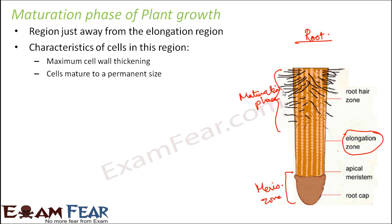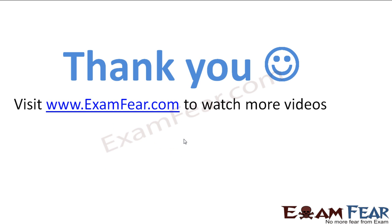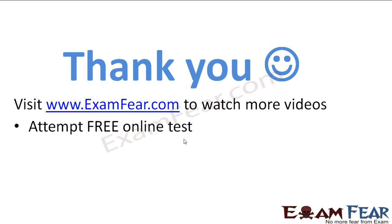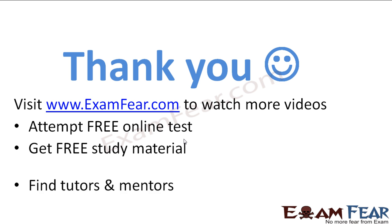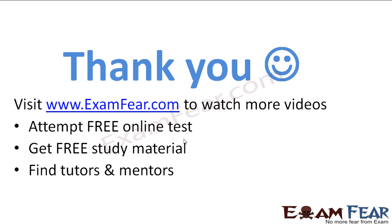So the three phases of plant growth are: first meristematic, followed by elongation, which in turn is followed by the maturation phase. I hope the phases of plant growth are clear. Please visit examfear.com to watch more videos, attempt free online tests, get free study material, and find tutors and mentors. Thank you once again.